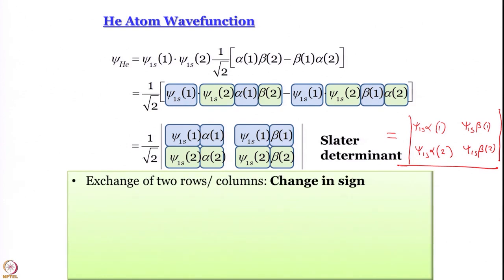What is the advantage of writing the wave function in terms of a determinant? First of all, when you talk about complex systems — atoms or molecules — you have to use computers. Computational chemistry has been a very big field for several decades because you cannot do all these calculations by hand. Matrices and determinants come in very handy because they are essentially data arranged in array form, which computers can work with efficiently.